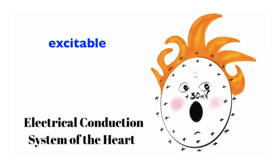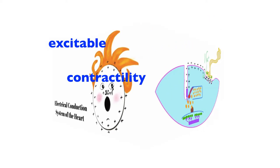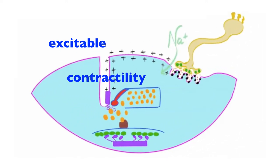The same applies for myocardial cells — cells of the heart — but it happens a little bit differently, because the heart has two different types of cells: the myocardial contractile cells, which are the workhorses of the heart causing blood to be ejected from the ventricles, and the myocardial autorhythmic cells, which are really going to be the basis for this lecture.